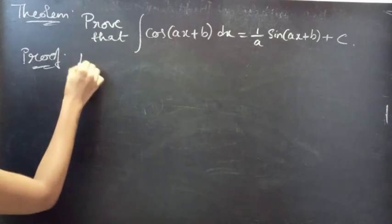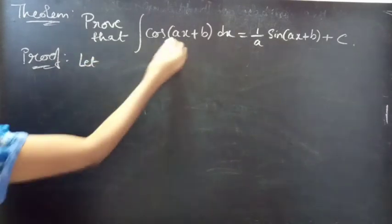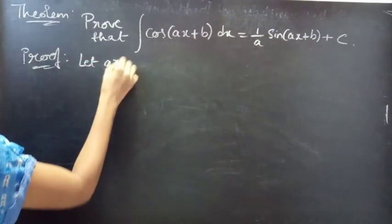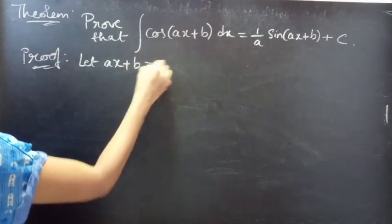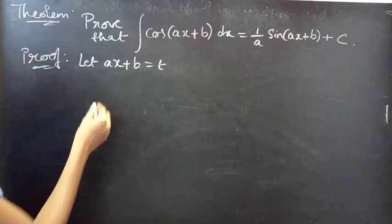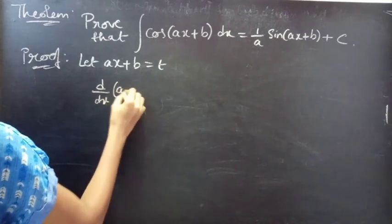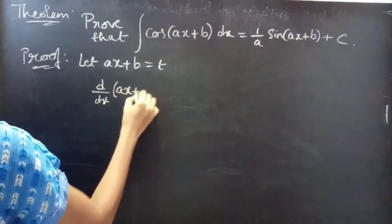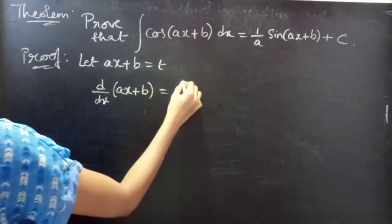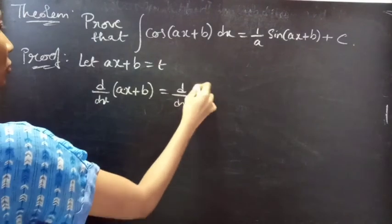So, let ax plus b equals to t. Now, differentiating on both sides with respect to x. D by dx of ax plus b equals to d by dx of t.